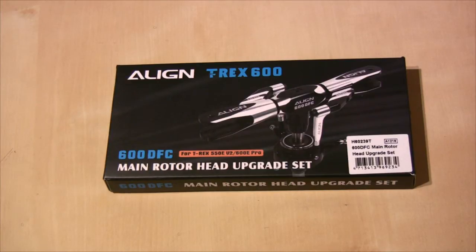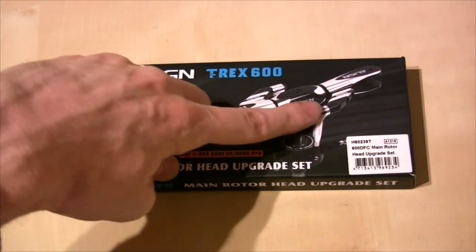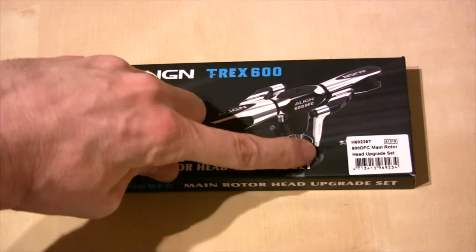It also does away with the little swash phasing arms that you normally have on a flybarless head. Instead, as you can see in the picture here, it uses these redesigned downlinks.